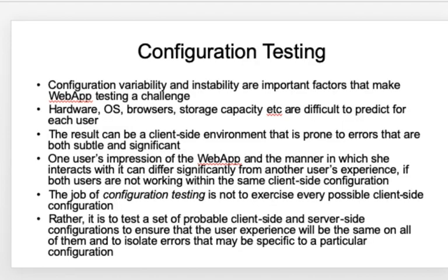In configuration testing, variability and instability are two key challenges. Even hardware, OS, and storage capacity are difficult to predict. The client-side environment is more prone to errors because it is subtle and significant. Since you cannot exercise every possible configuration, you define a probable client-side and server-side configuration, run configuration testing, isolate errors, correct them, and only then make your web app go online.